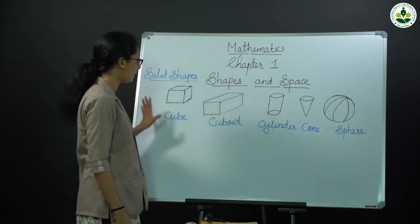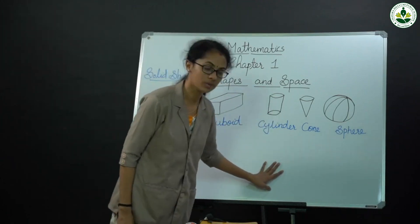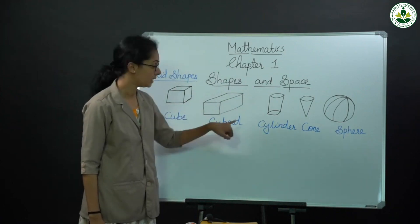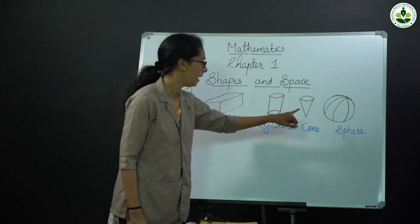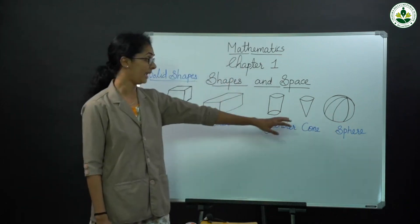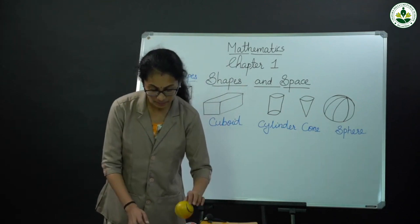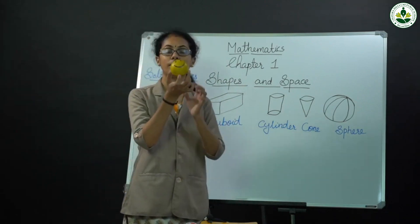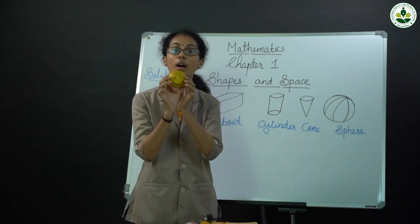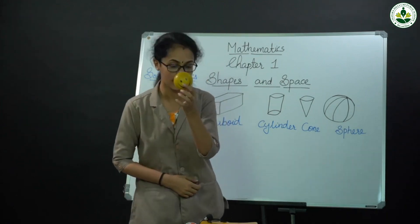These are solid shapes. Once more: cube, cuboid, cylinder, cord, and spear. Then examples for spear — what is the shape of this ball? This ball is in the shape of spear. Spear shape.